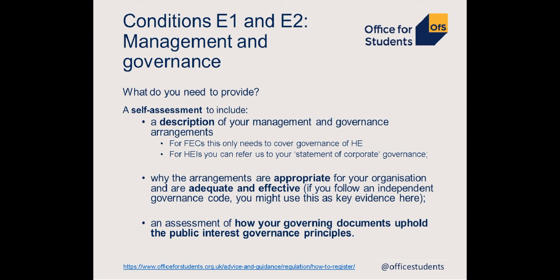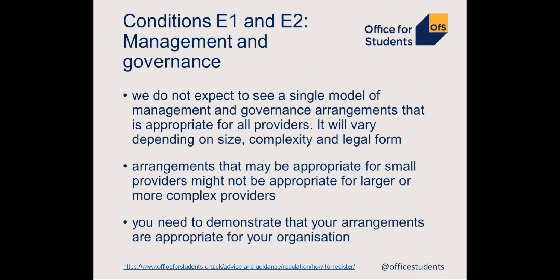Condition E2 requires you to demonstrate the effectiveness and appropriateness of your management and governance arrangements. This applies to all providers. Your self-assessment must include a description of your management and governance arrangements for your higher education provision, an assessment of how those arrangements are adequate and effective, and an assessment of how your governing documents uphold the public interest governance principles relevant to your application. If you follow an independent governance code, you might use this as key evidence. For example, small providers might not have something called a governing body, and the senior management team might undertake all the functions that in a larger provider would be delegated to committees. This is fine and we would simply expect you to describe this and explain how it is appropriate for your organisation.